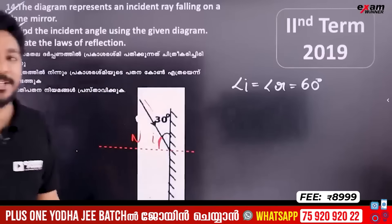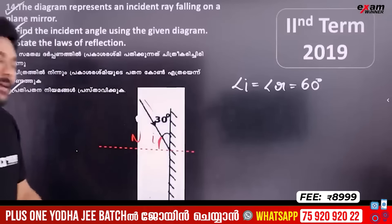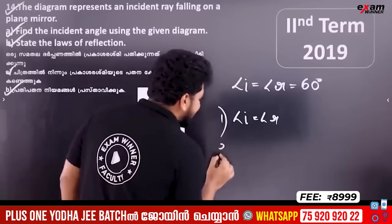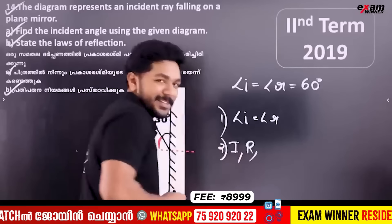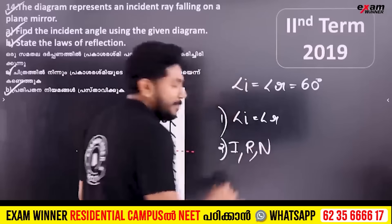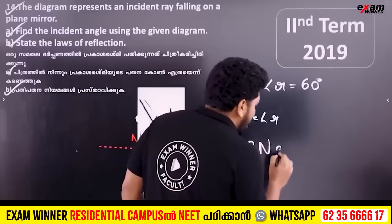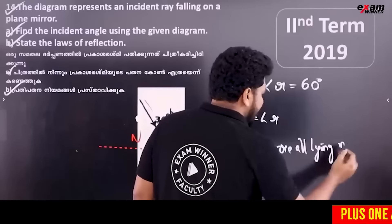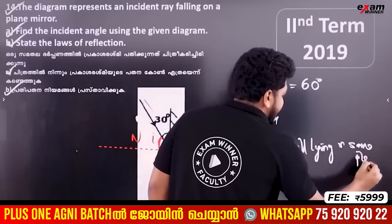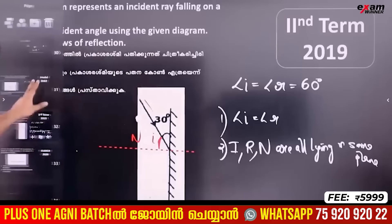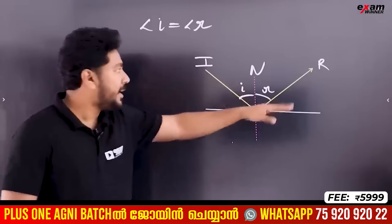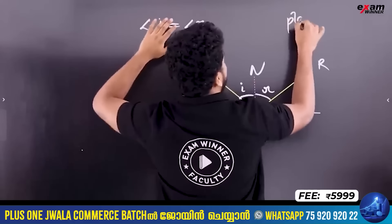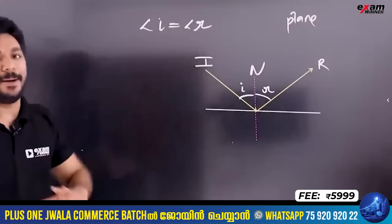State the laws of reflection. First: the angle of incidence is equal to the angle of reflection. That's the first law. Second: the incident ray, reflected ray, and the normal all lie in the same plane. The incident ray, reflected ray, and normal — these three lie in the same plane.